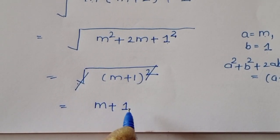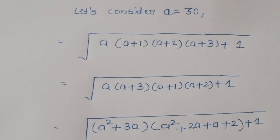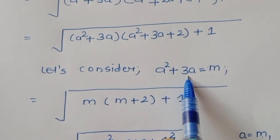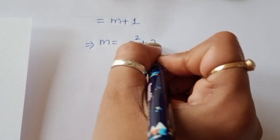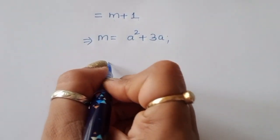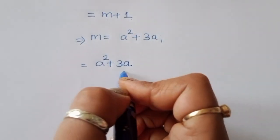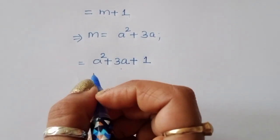We got the result m plus 1. Now we substitute back: we already considered m equal to a squared plus 3a. So m plus 1 equals a squared plus 3a plus 1.